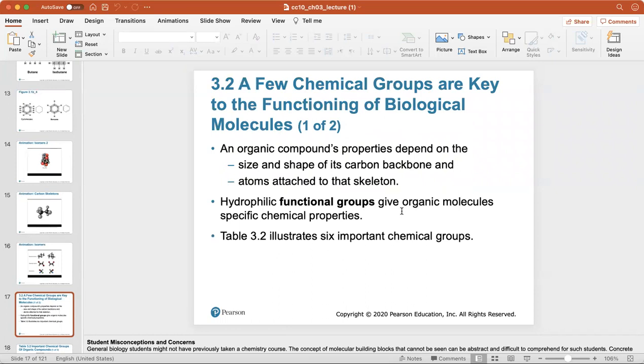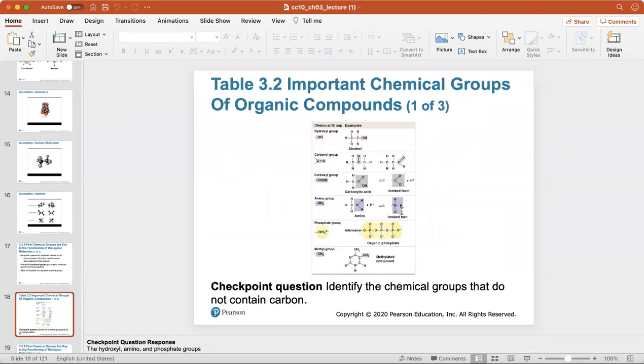A few chemical groups are key to the functioning of biological molecules. Organic compounds' properties depend on the size and shape of its carbon backbone and the atoms attached to that skeleton. Hydrophilic functional groups give organic molecules specific chemical properties. In the next table we'll illustrate six important chemical groups.